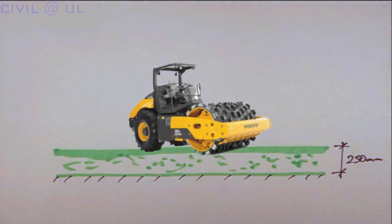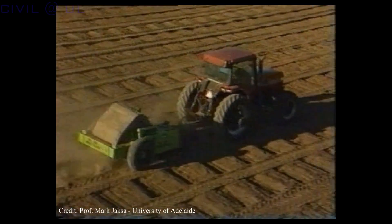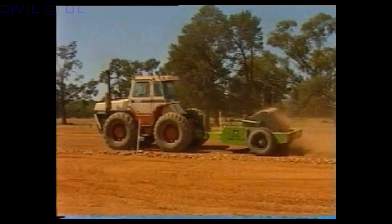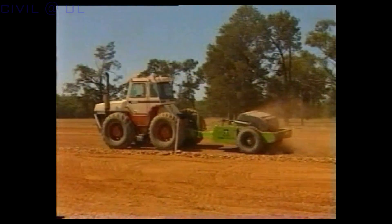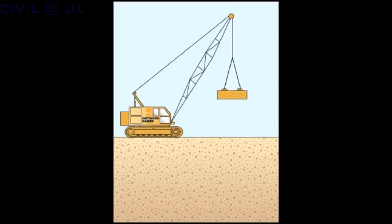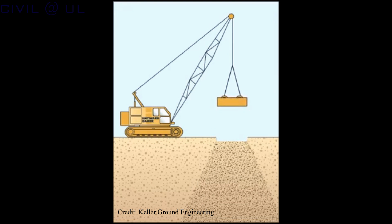For deeper compaction of coarse-grained soils, an impact roller may be used. These are effective up to depths of approximately one meter and have a much higher operating velocity than the smooth drum roller, so they're much more efficient.